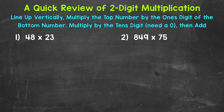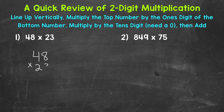Let's jump into number one, where we have 48 times 23. The first thing we need to do is line this up vertically, so we're going to rewrite it up and down. Going below the problem, we have 48 times 23.